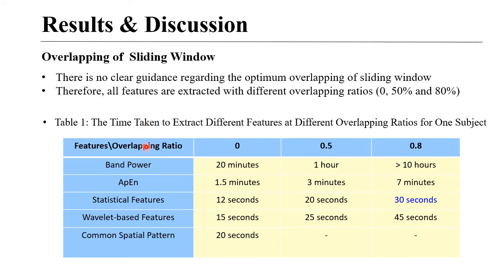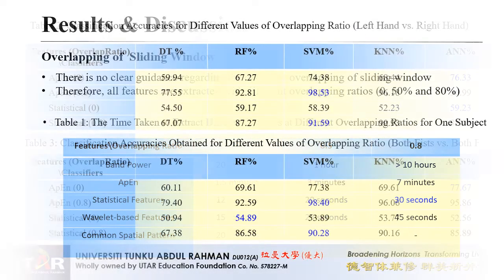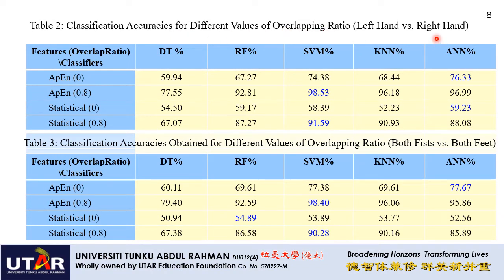In the results, we first look at the time to extract different features. As the overlapping ratio increases, the time to extract features also increases. For one subject, statistical features take about 30 seconds, making them the fastest. Looking at classification accuracy for different overlapping ratios for left versus right hand, the best result is obtained by approximate entropy with 98.53 percent accuracy using SVM as the classifier.